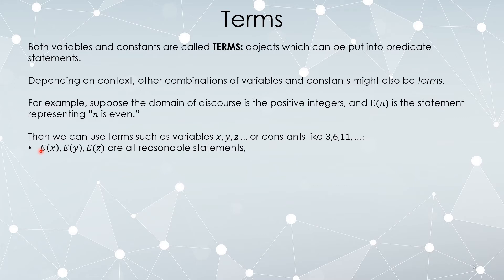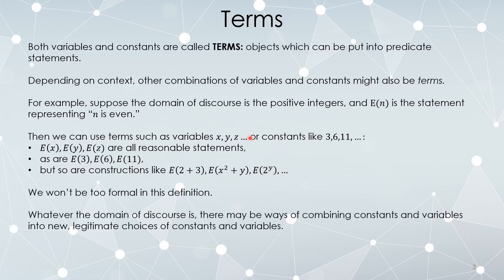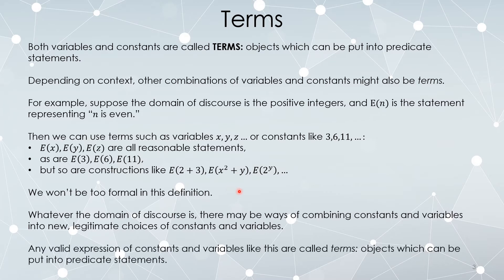I can't evaluate them as true or false until I plug in a specific constant, but they are predicate statements and these are things I can explicitly check out. You could also do something like: is 2 plus 3 even? Now 2 plus 3 is not exactly a constant — 5 is a constant, but 2 plus 3 is some sort of expression involving constants. Is x squared plus y even? Is 2 to the y even? These aren't quite constants and not exactly variables, but they're expressions involving constants, variables, or both that do make sense. Whatever the domain of discourse is, there might be legitimate ways of combining constants and variables into potential choices to plug into predicate statements, and all of them are called terms.